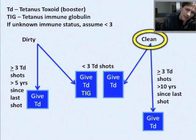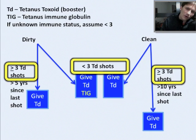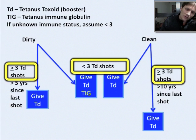The next question is: how many tetanus shots has this person had in their lifetime? If they've had three or more, you're going to be on the left or right lattermost part of the M. And if they don't know, or if they've had less than three tetanus shots, you're going to be in the very middle of the M. If a patient doesn't know if they've had tetanus shots, you have to assume they've had less than three.